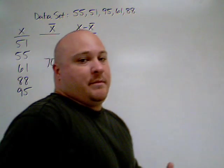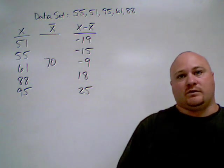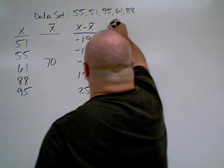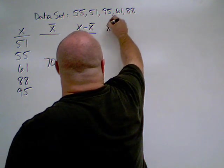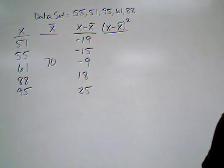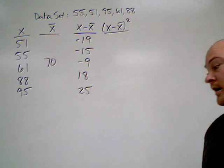Now, when we did mean absolute deviation, what we did was we took the absolute value. Instead, we're going to square these. So, we're taking the same value, and we're going to square them. That's going to give us a positive value.